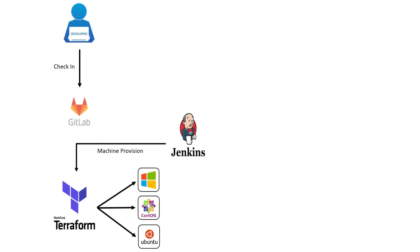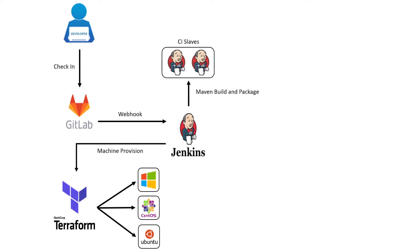In the next stage, the Jenkins job will pull the Node.js application source code from GitLab. A webhook is configured on GitLab so that the ongoing deployment job will trigger automatically when a commit happens on a particular branch. In the next stage, the Node.js application source code will be built either in Jenkins master or slave based on the target operating system. In case of any failure in the build step, the pipeline will be aborted and the deployment package archived on Jenkins for future use.